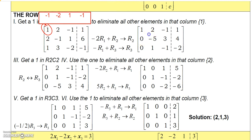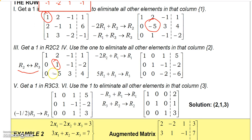Next I need a 1 in the second pivot position, but there's a negative 5 there. You're usually safe swapping with a row below — just don't swap with a row above since that would mess up the leading 1 and 0 already established. I can see there's a 1 below the negative 5, so I'll just swap row 2 with row 3. That gives me a 1 in the second pivot position, which is what I needed.